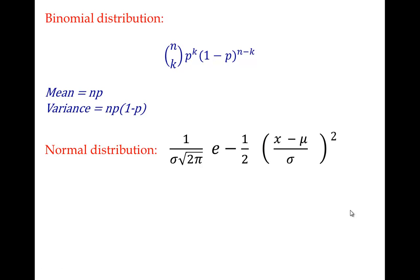The formula of binomial distribution: in n trials, the probability of k successes is given by n choose k, p^k, (1-p)^(n-k), where p is the probability of success and 1-p is the probability of failure. The mean of the binomial distribution is given by n*p and the variance is given by n*p*(1-p).